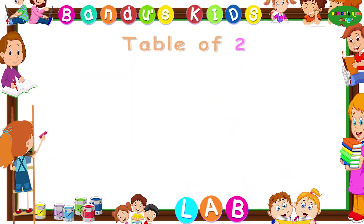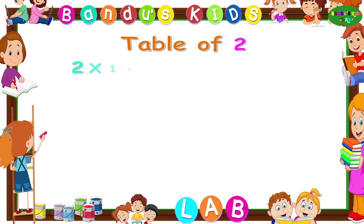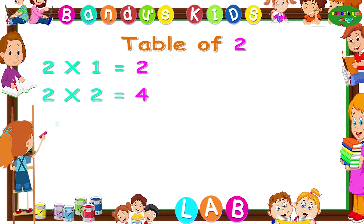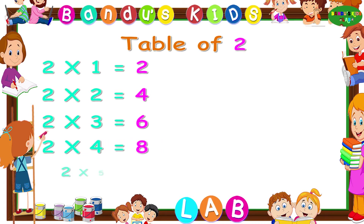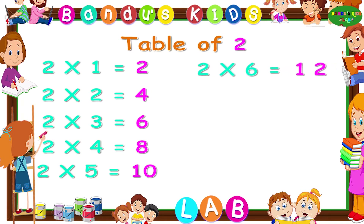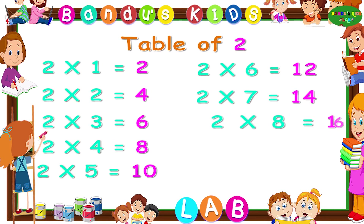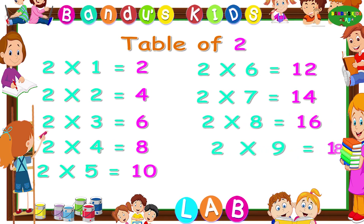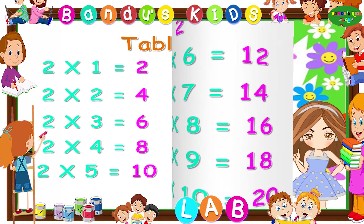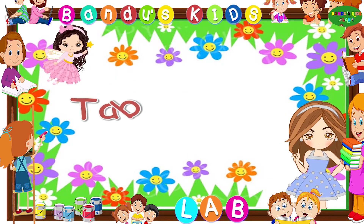Now let's revise the table of two one more time by singing. Two ones are two. Two twos are four. Two threes are six. Two fours are eight. Two fives are ten. Two sixes are twelve. Two sevens are fourteen. Two eights are sixteen. Two nines are eighteen. Two tens are twenty.